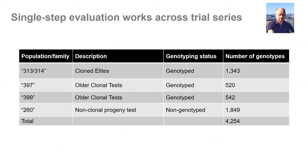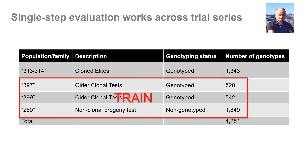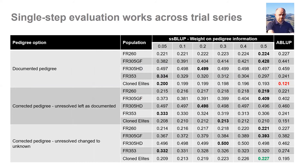Even with the most ambitious genotyping investments, we won't be able to genotype everything. A single-step evaluation analysis allows us to combine data from genotyped and non-genotyped trials and trial series for predictions. For the cloned elites, the conventional approach currently gives predictive accuracy of 0.2. Using genomics and merging genotyped and non-genotyped trial series, we can nearly double that to 0.23 — and there is great potential there to combine trial series and populations.